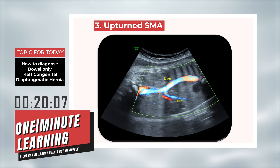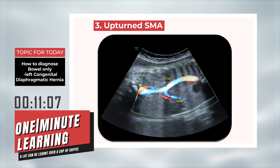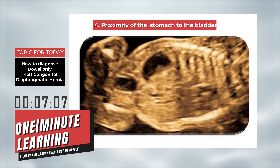The third clue would be: if you try to identify on a coronal section with color Doppler the superior mesenteric artery, you would realize that it is following faithfully the bowel up into the thorax — so you would find what is called an upturned superior mesenteric artery.